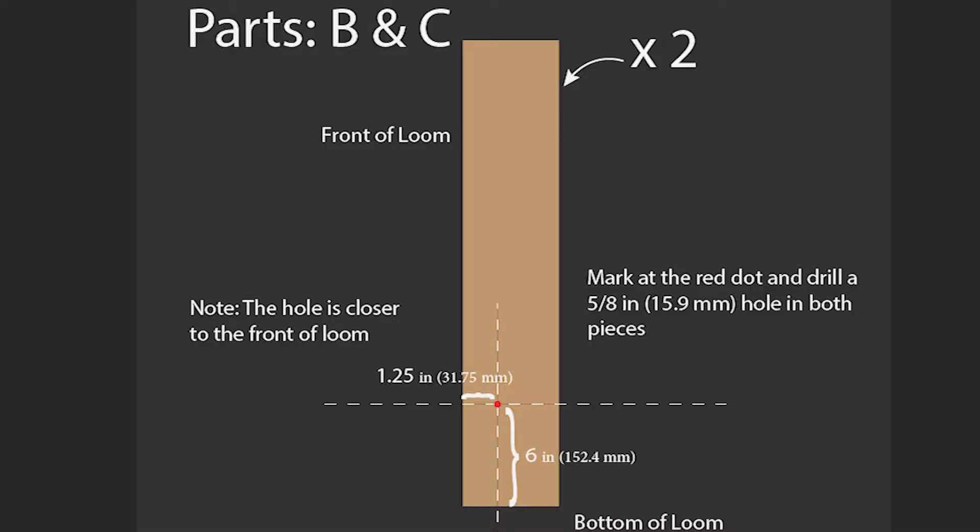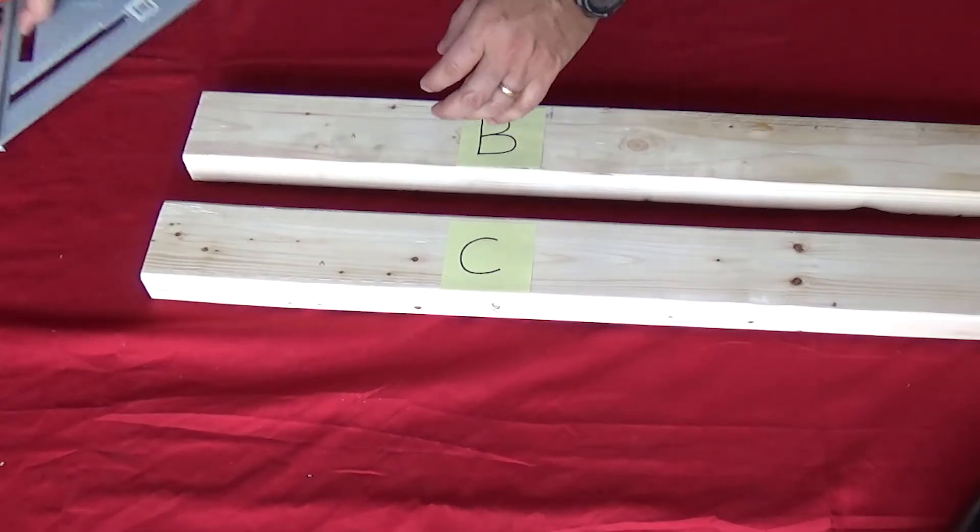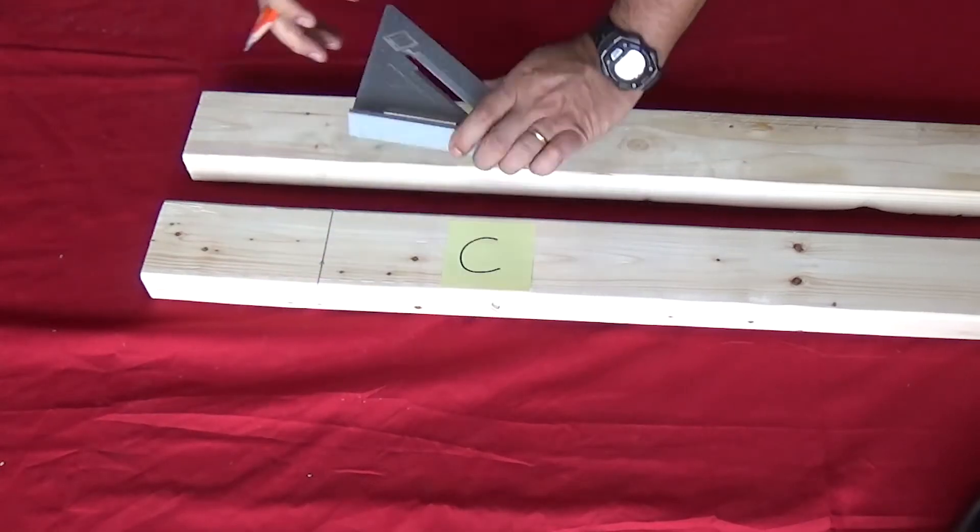We now move to parts B and C which make up the sides of the loom. Mark each hole and drill both.